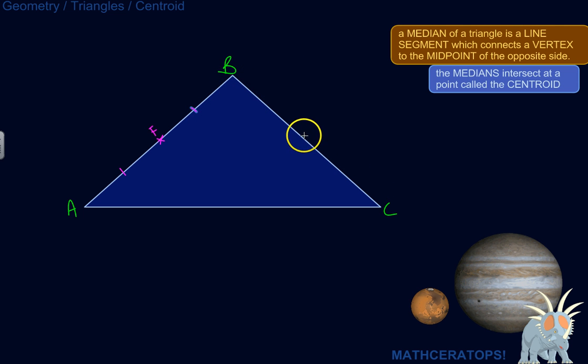BC, again, just eyeballing it, say about right there, would be the midpoint so that these two line segments are congruent.